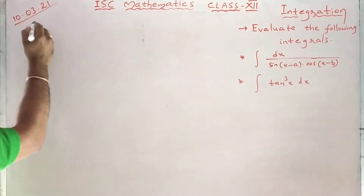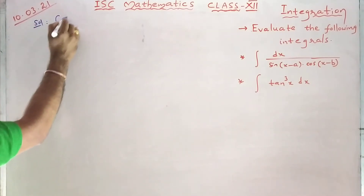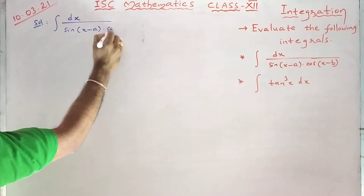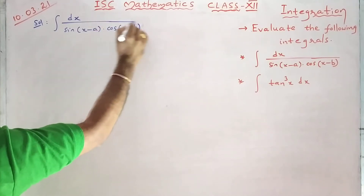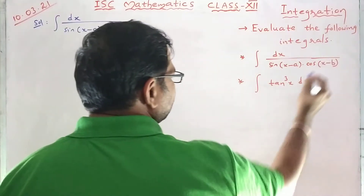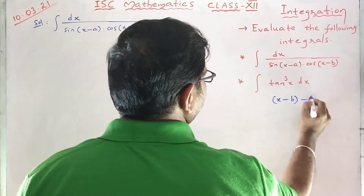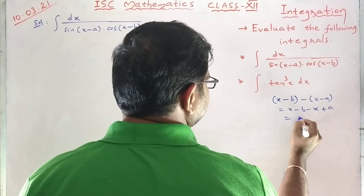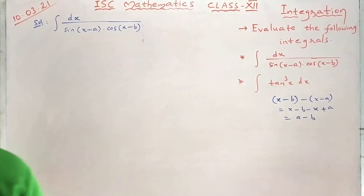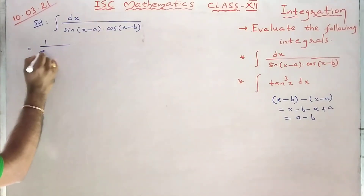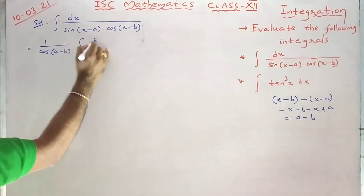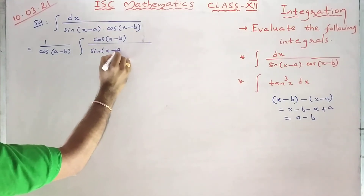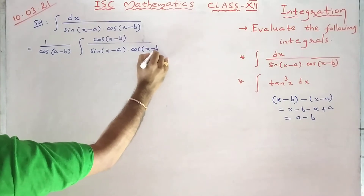Look at the question. We continue with the integral of dx upon sin(x minus a) into cos(x minus b). If you simplify x minus b minus of x minus a, you will get x minus b minus x plus a. The x's get cancelled, and what remains is a minus b. So I am taking cos(a minus b), and multiplying and dividing with sin(x minus a) cos(x minus b) dx.